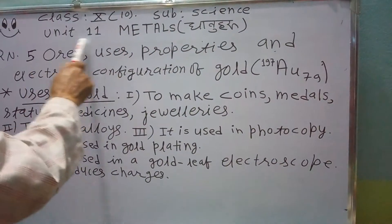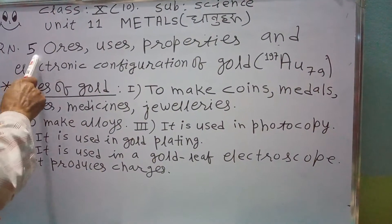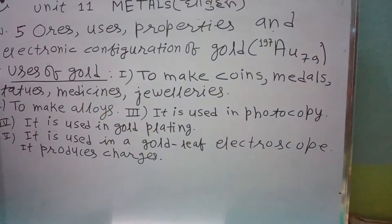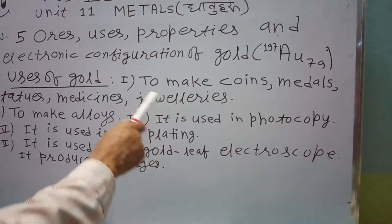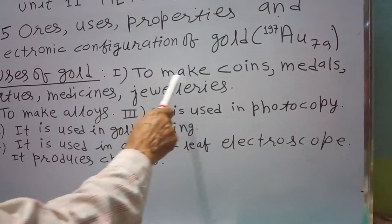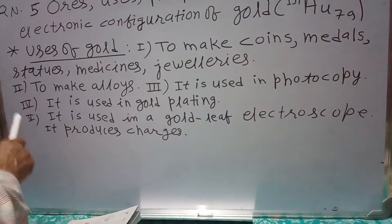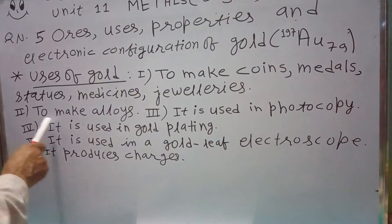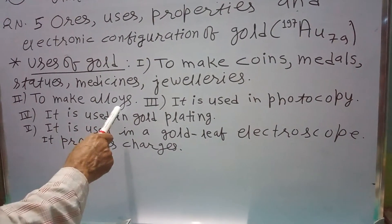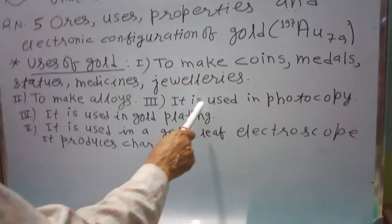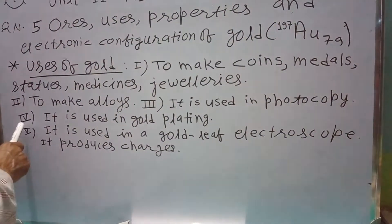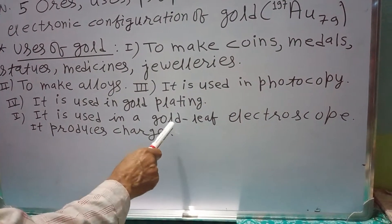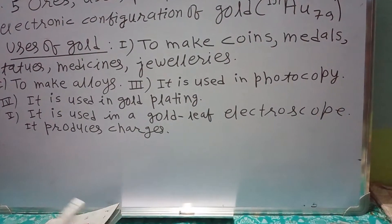Class 10, subject science, unit 11 metals. Question number 5: Ores, usage, properties and electronic configuration of gold. Number 1, usage of gold. Gold is very useful for the following reasons: Number 1, to make coins, medals, wires, statues, medicines, jewelries, etc. Number 2, to make alloys which are homogenous mixtures of two or more metals. Number 3, it is used in photocopy. Number 4, it is used in gold plating. Number 5, it is used in a gold leaf electroscope. It produces charges.